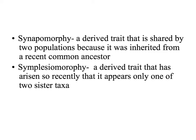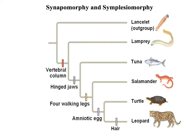In this phylogenetic tree, the trait vertebral column is a synapomorphy of all the species from lamprey to leopard, as it is a shared derived trait inherited from a recent common ancestor. The hair in leopard is a symplesiomorphy because it's a derived trait that appears in only one of two sister taxa, since leopard has hair and sister taxon turtle doesn't.